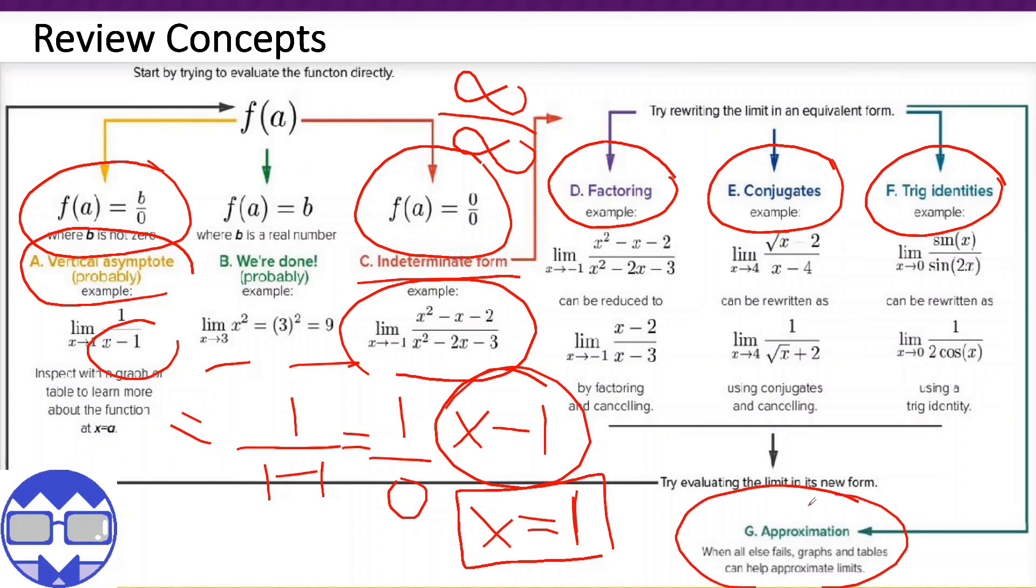And lastly, of course, if nothing works for the factoring, the conjugate, and the trig identities does not work or do not work, we will use approximation method or we know this, we already discussed this, this is the table of values. Because again, using the table of values, we try to approximate the limit.